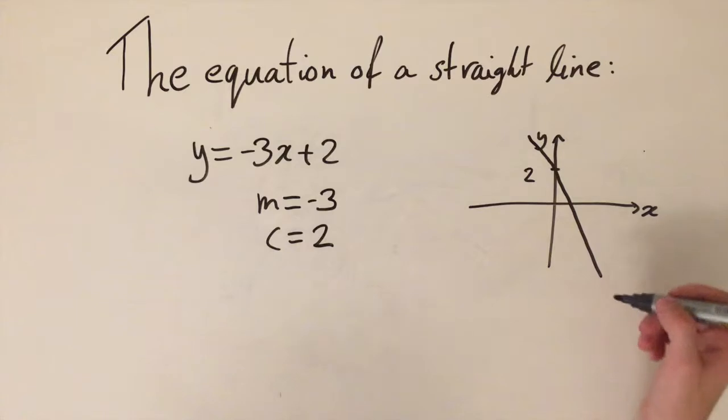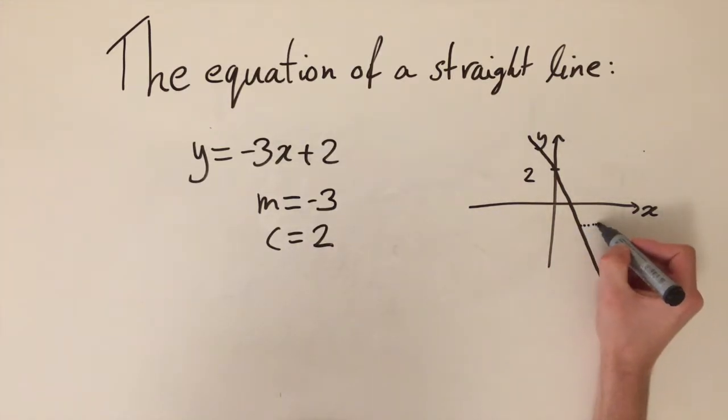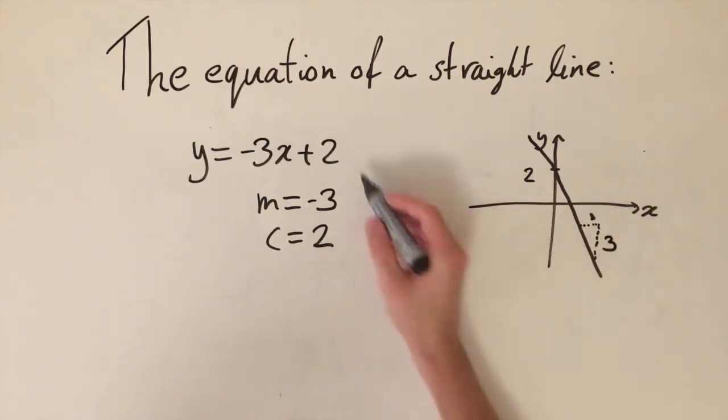That should be straight, I'm not very good at sketching. But the minus 3 tells us that if we go to the right by one unit, then we have to go down by three units. So this gives us a sense of how steep this line is. And that's all the information you need to know about sketching a straight line.